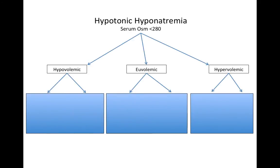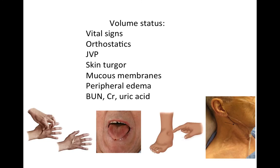By far the most common cause of hyponatremia is hypotonic hyponatremia, with a serum osmolality under 280. To break down hypotonic hyponatremia, we first assess the patient's volume status, which is done by examining the patient directly — vital signs, physical exam — and can also be supported by looking at the BUN-to-creatinine ratio.